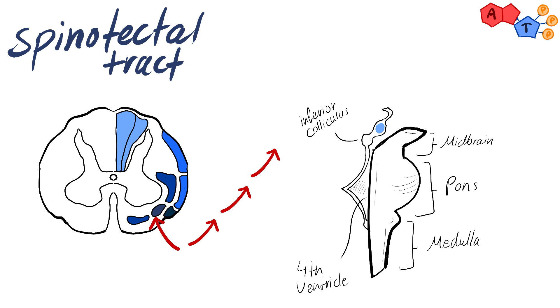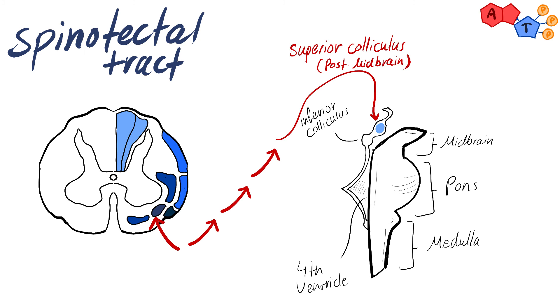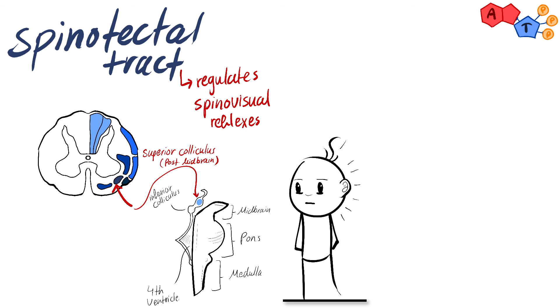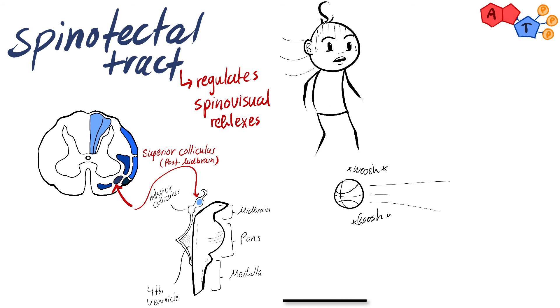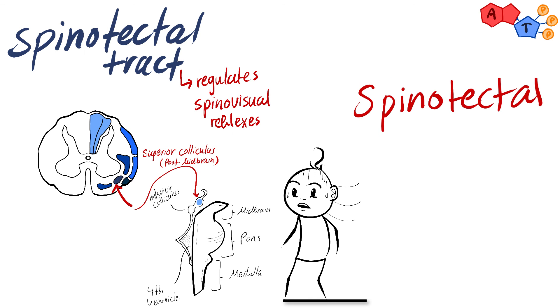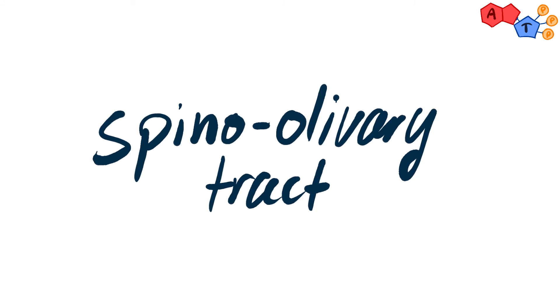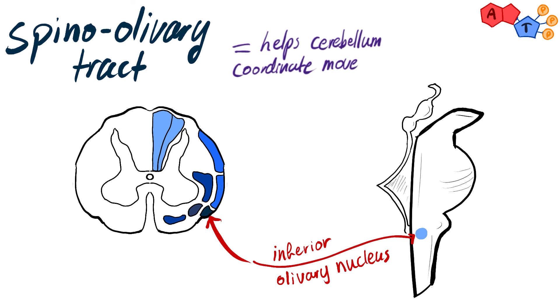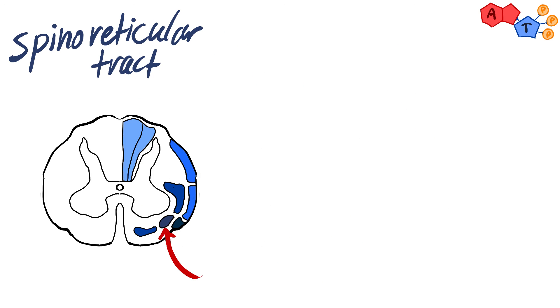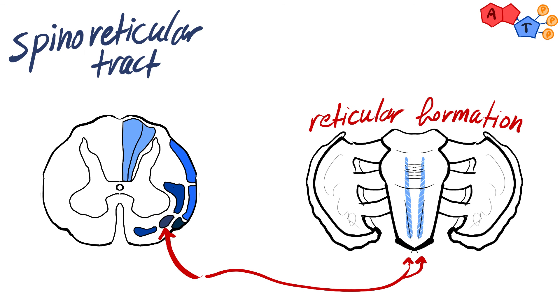The fourth tract is the spinotectal tract, which carries information to the superior colliculus — an area on the posterior part of the midbrain — and regulates spinovisual reflexes. For example, if you sense something is about to hit you, you move your head to see what's coming; this reflex is mediated by the spinotectal tract as the sensory arm, and the tectospinal tract as the motor component. The fifth tract is the spinoolivary tract, which carries information to the inferior olivary nucleus in the medulla, helping the cerebellum coordinate movement and achieve balance. The sixth and last sensory tract is the spinoreticular tract, which synapses with the reticular formation in the brain stem and plays a role in transmitting chronic or deep pain signals.